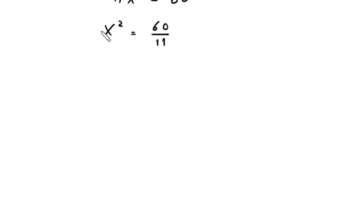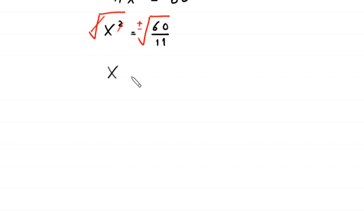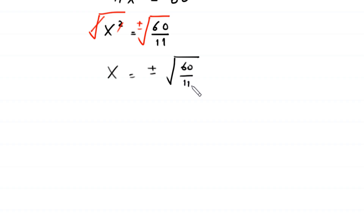Now we take the square root of both sides. The square cancels with the square root and we are left with x is equal to plus or minus square root of 60 over 11.